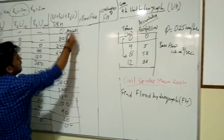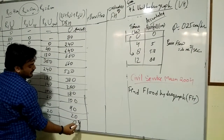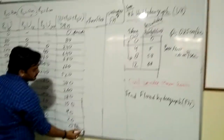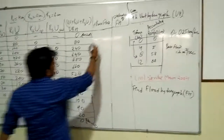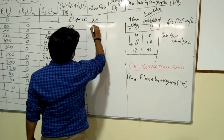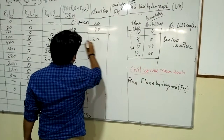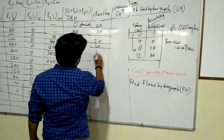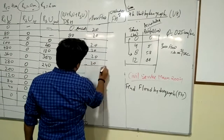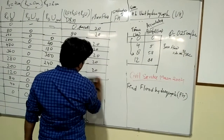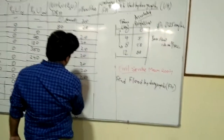We are about to begin, and this is the duration when upper rainfall ends. The base flow given is 20 cubic meters per second. We have to add this 20 cubic meters per second to obtain our flood hydrograph.